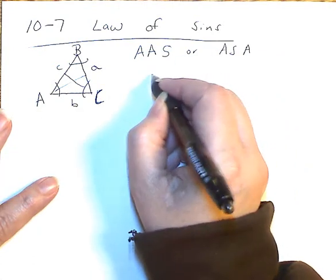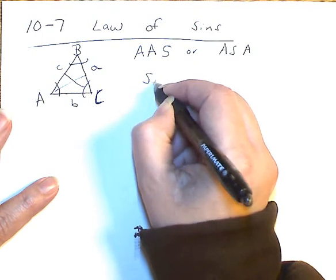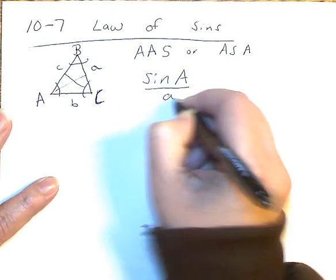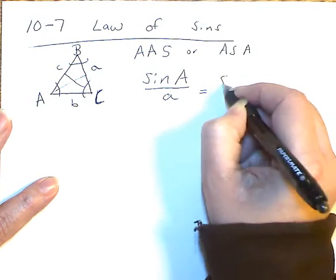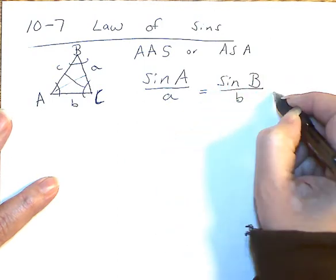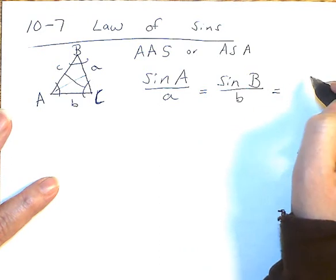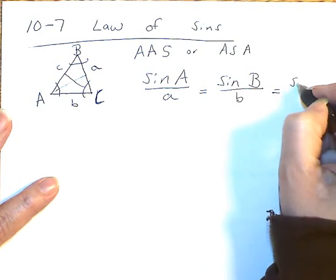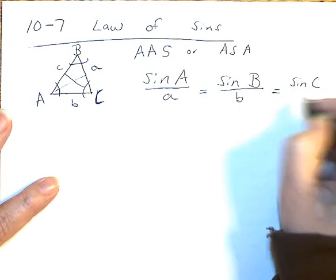Law of Sines is sine of big A over little a is equal to sine of big B over little b, which is equal to sine C, big C, over little c.